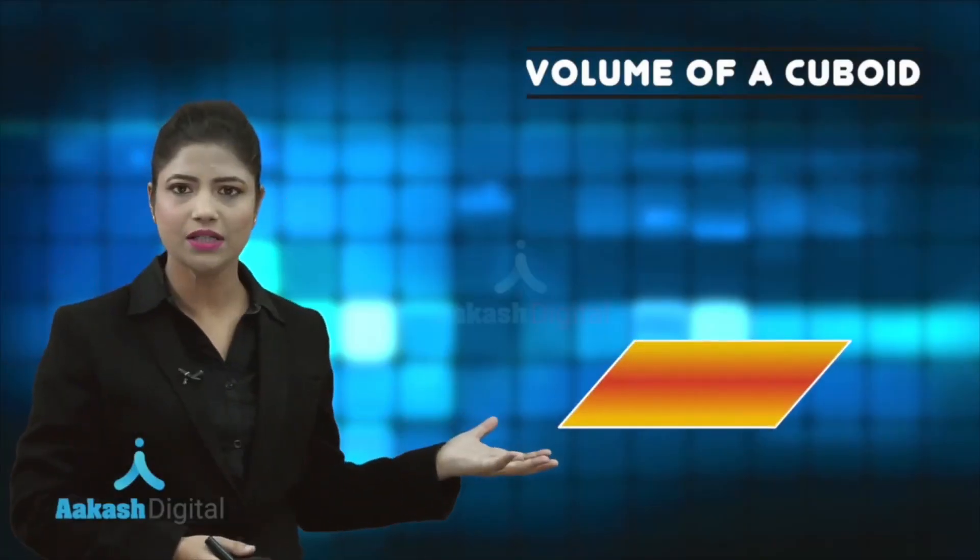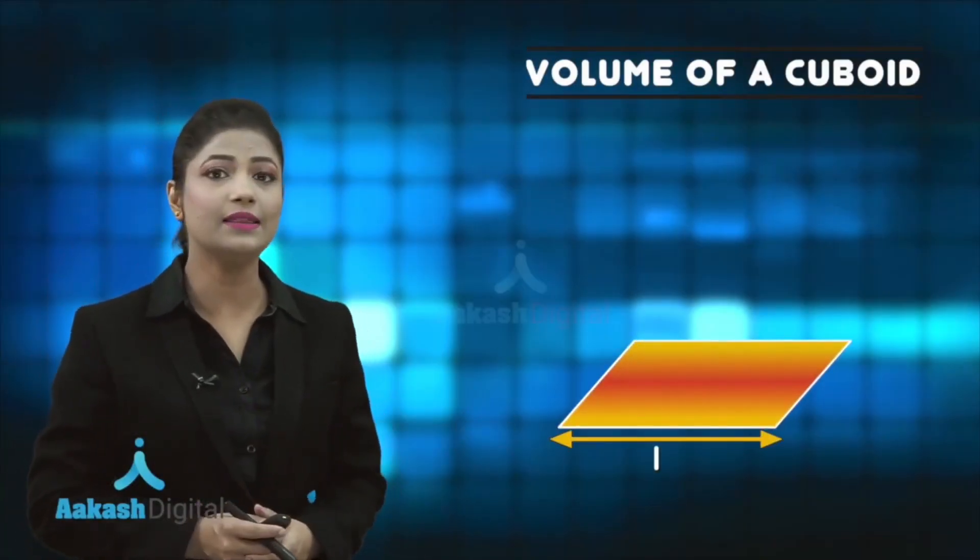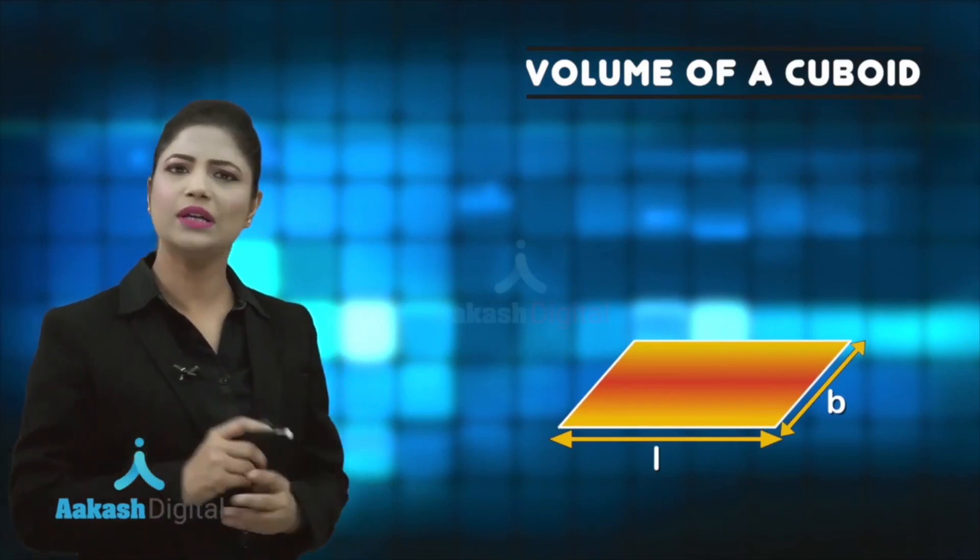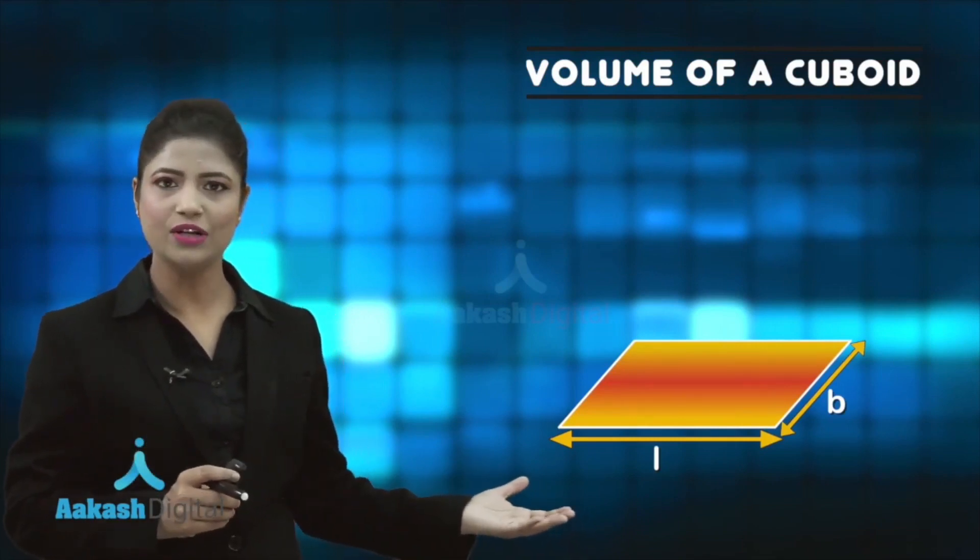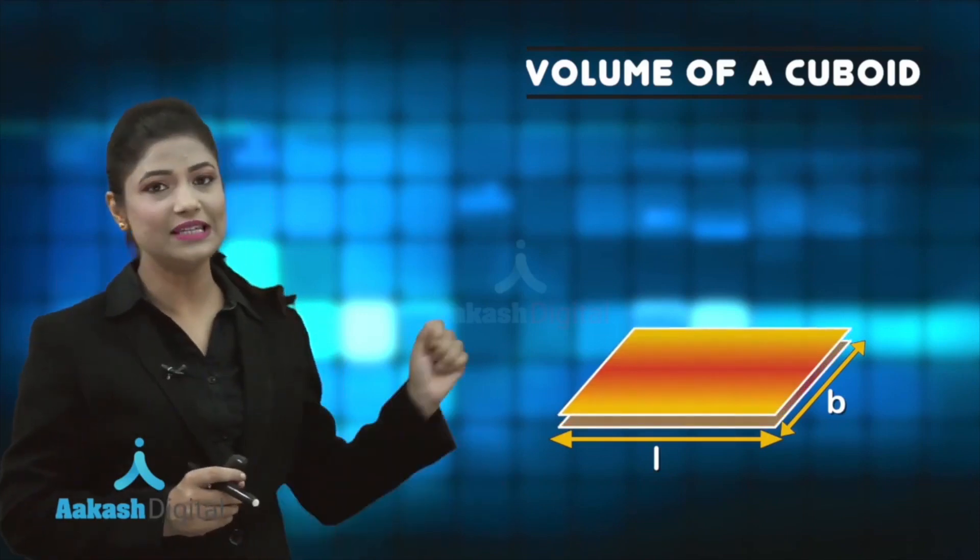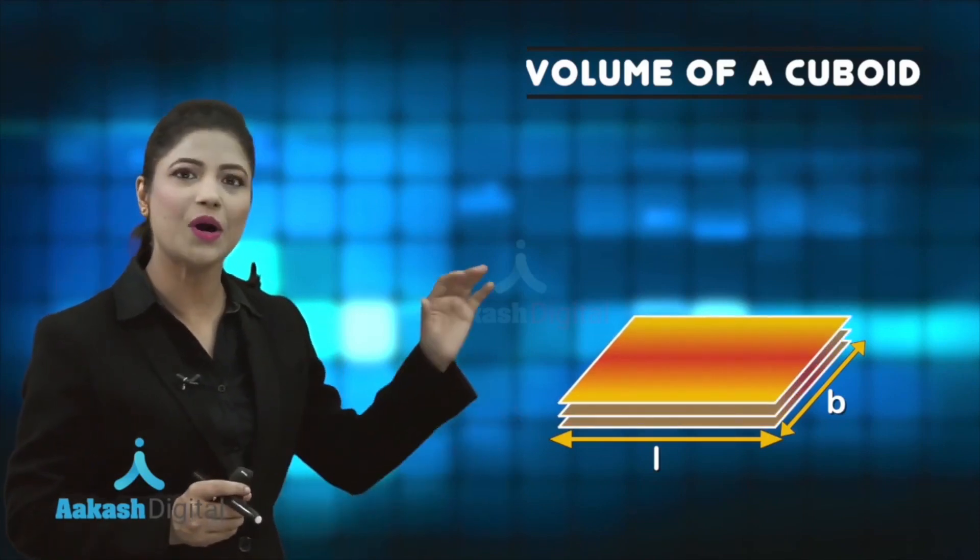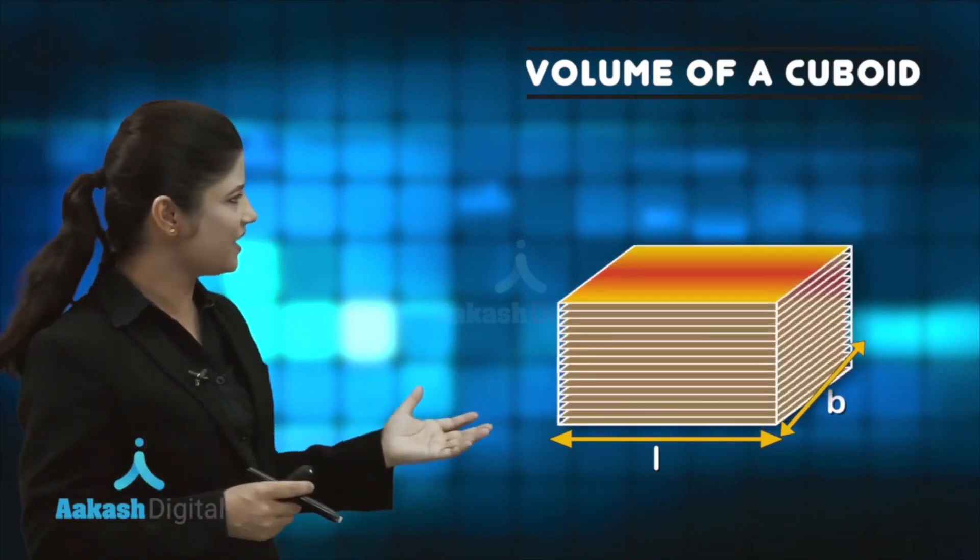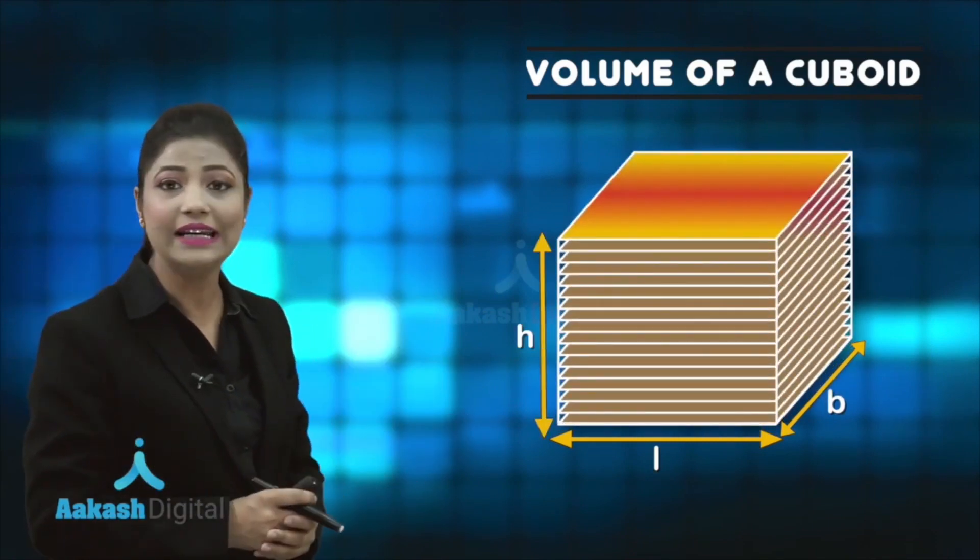Here you can see we have this rectangular sheet with dimensions length and breadth. You can easily obtain the area of this rectangular sheet by taking the product of L and B. As you can observe, these rectangular faces are stacking one over the other, taking the shape of a cuboid with height h.